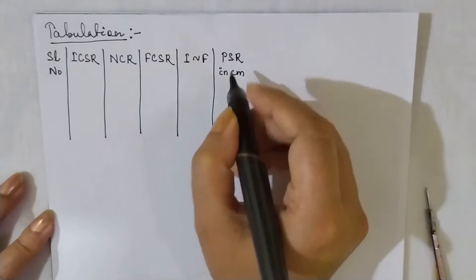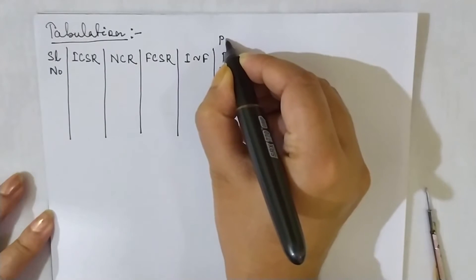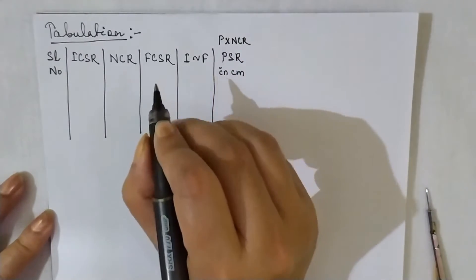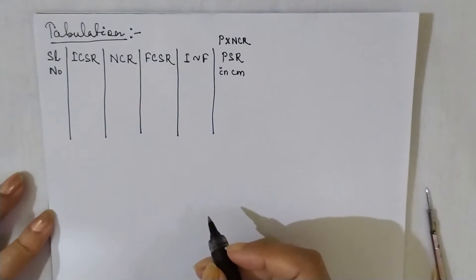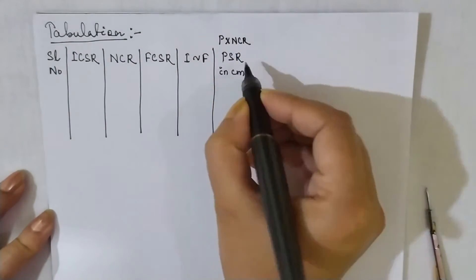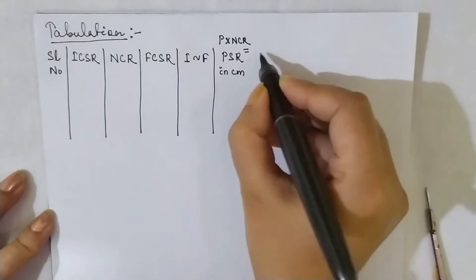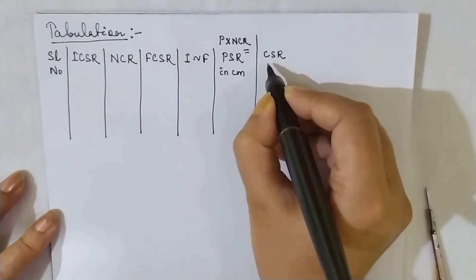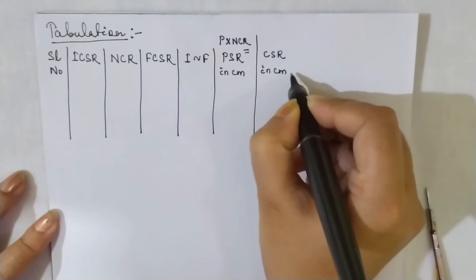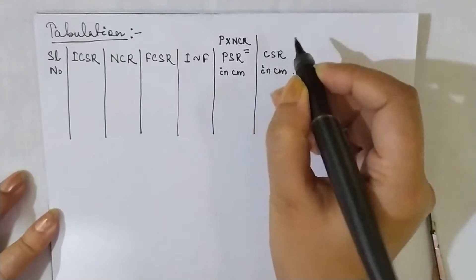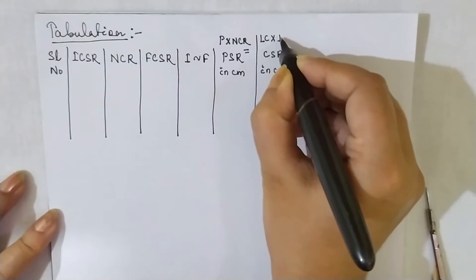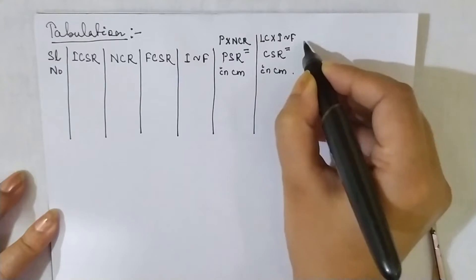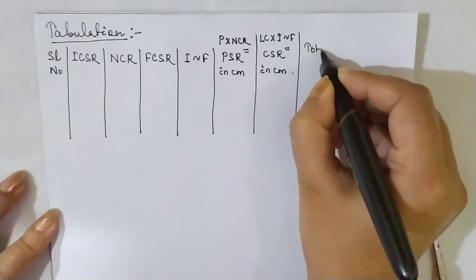After that comes PSR, which is in centimeters — Pitch Scale Reading. How to calculate PSR: it is pitch multiplied by NCR, the number of complete rotations. I have calculated the pitch in my previous video and recapitulated it here. This multiplication gives us PSR. Similarly, the next column is CSR — Circular Scale Reading, also in centimeters. CSR is calculated as least count multiplied by extra division, which is the I-difference.